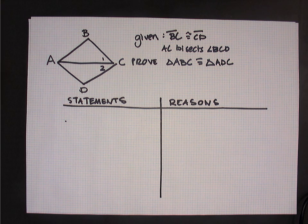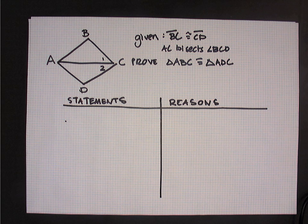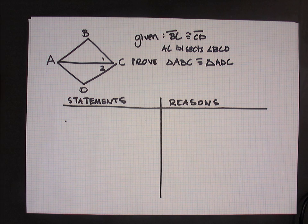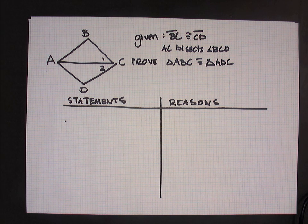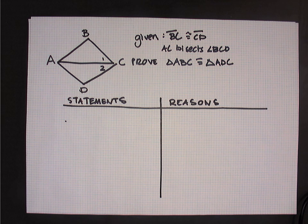We always want to start by identifying three pairs of either angles or sides that are congruent to each other — there's a slight exception when proving congruence using HL, but in general you're always looking for three pairs. Once you've established those three pairs of congruent angles or sides, we're going to use one of our triangle congruence theorems to state that the triangles are congruent. Let's get started.